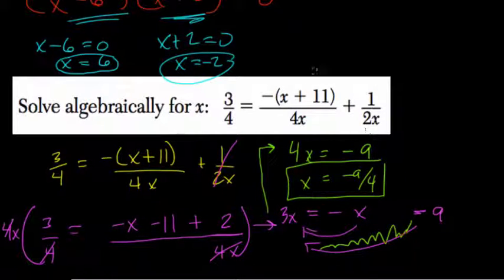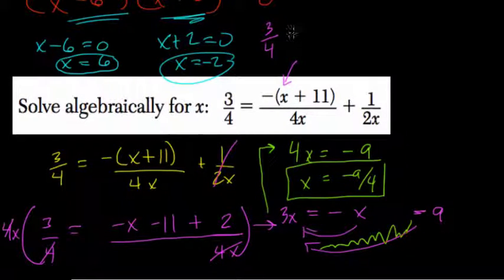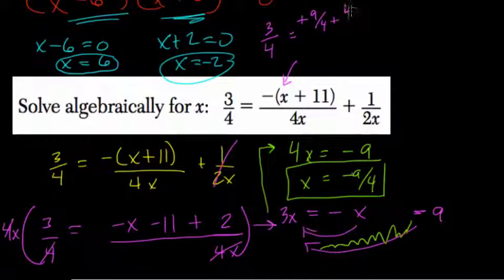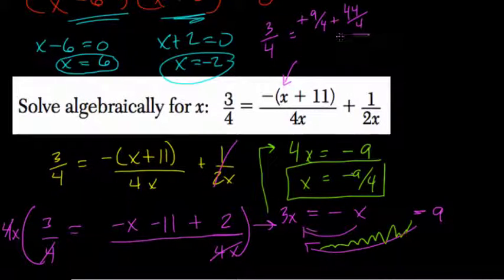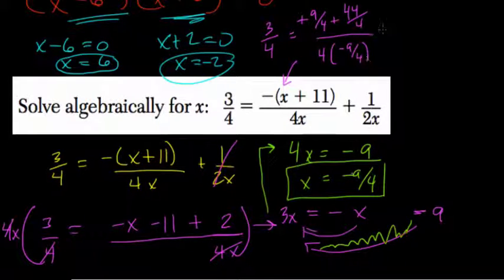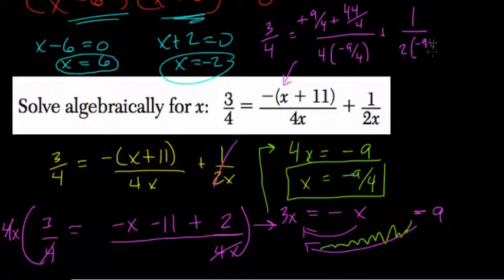We plug in, and we'll see that it's true. Let's just try it because I'm a little nervous about this one now. So you have negative 9 over 4. So does 3 4ths equal negative 9 over 4, so plus 9 4ths, plus 11, that's 44 4ths, over 4 times negative 9 4ths, plus 1 over 2 times negative 9 4ths.